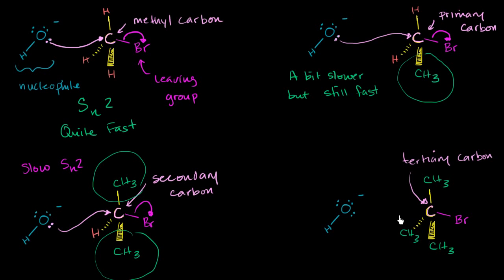And now finally, what's happening here? This entire side is blocked. We have a CH3, CH3, CH3. This hydroxide anion isn't going to be able to get through. It is being hindered. So here we have no SN2.